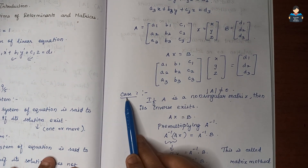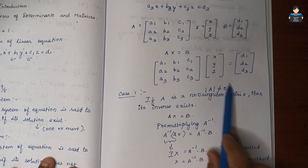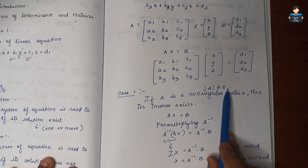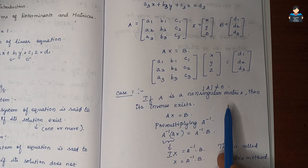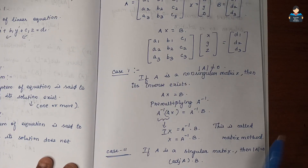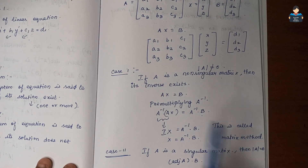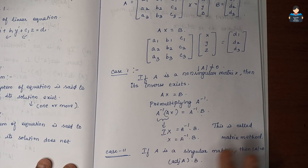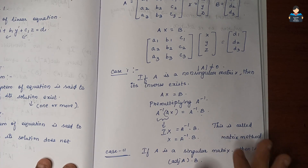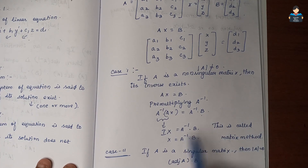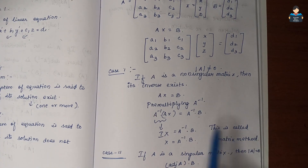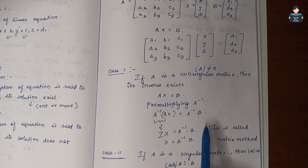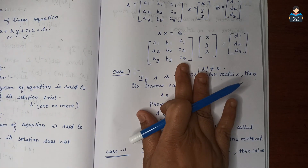Case 1 summary: if A is non-singular, determinant of A not equal to 0, then the inverse exists. We find A inverse as 1 over determinant of A times adjoint of A, and substitute to solve for X equals A inverse B.